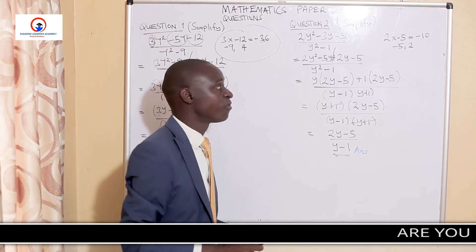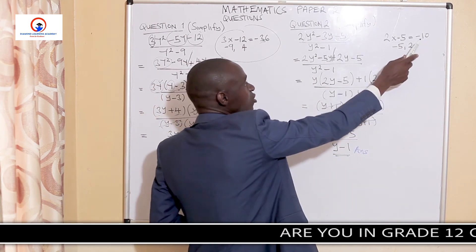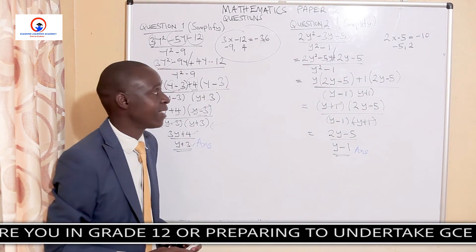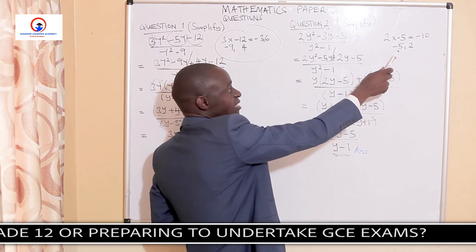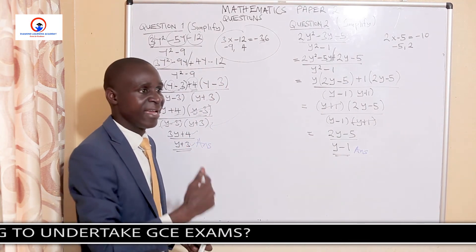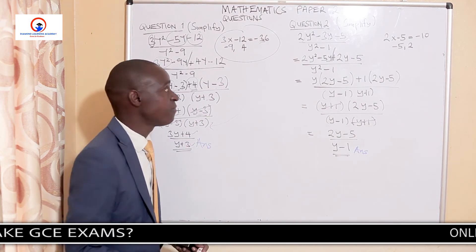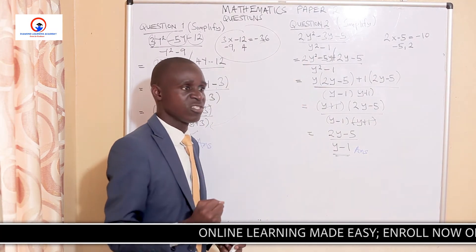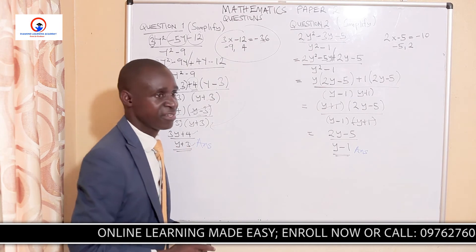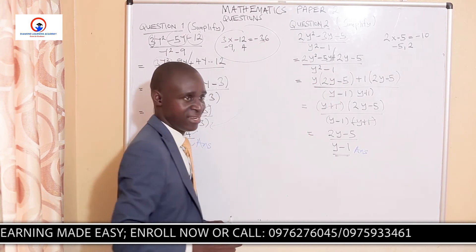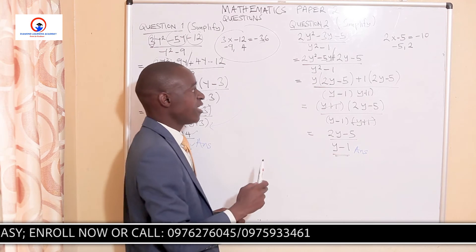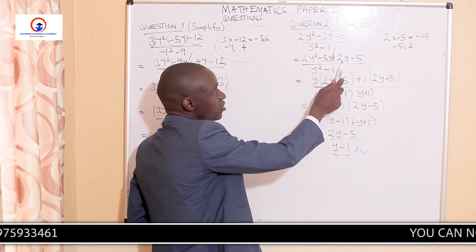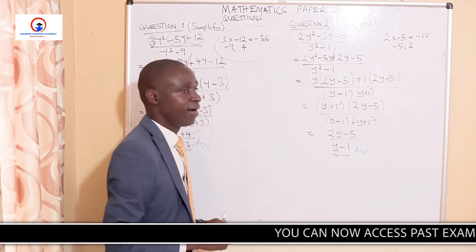From there, we find which factors of negative 10, when added, give us the middle part, which is negative 3y. I picked negative 5 and positive 2 — negative 5 plus 2 gives us negative 3. Once we get those factors, we insert them in the expression. So the expression has grown to 2y squared minus 5y plus 2y minus 5.